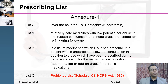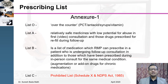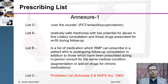List O covers over-the-counter medications such as paracetamol, lozenges, and vitamins. List A covers first-line treatments with the least abusive potential, and can be given only after video consultation or during tele follow-up. List B is a list of medications which an RMP can prescribe during follow-up consultation, in addition to those prescribed during in-person consultation for the same medical condition — essentially augmentation or add-on drugs for chronic medical conditions.